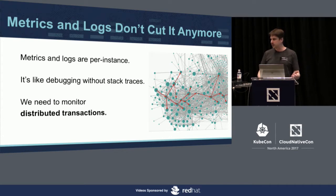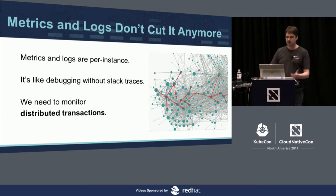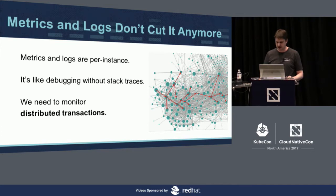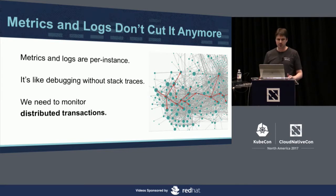Distributed tracing is essentially giving you what you can consider distributed stack traces — what happens across all your services in a microservices architecture. When we're trying to monitor an architecture as complex as Uber's, we want to monitor distributed transactions, not just individual instances.